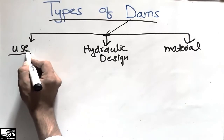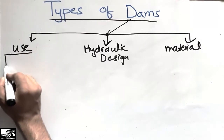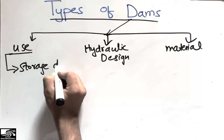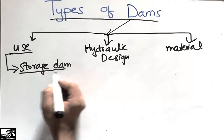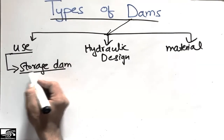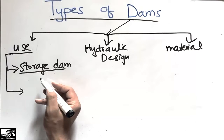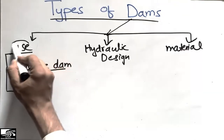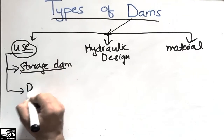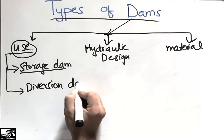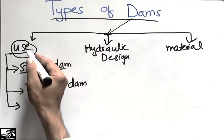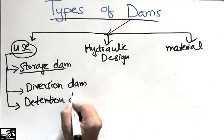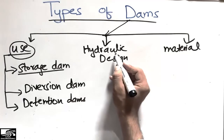The classification of dams according to use has three further subtypes. The first is the storage dam — they store water for different purposes including electricity, industrial, and irrigation uses. The second type is the diversion dam. The third subtype in this category is the detention dam.